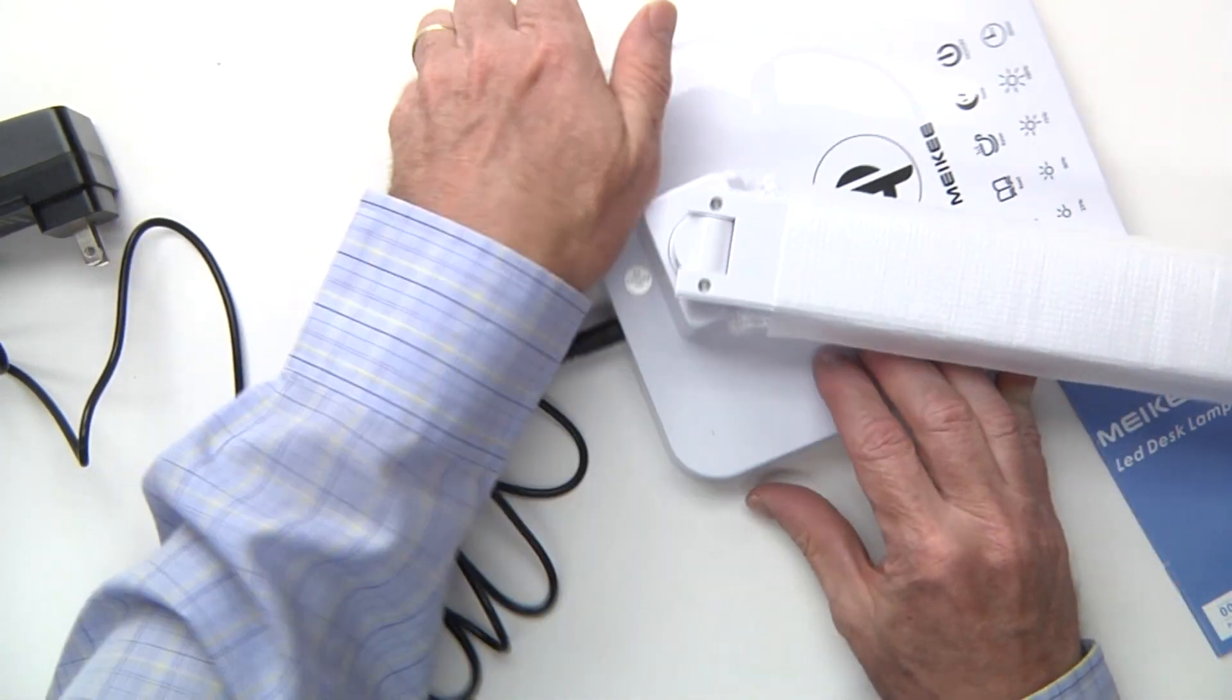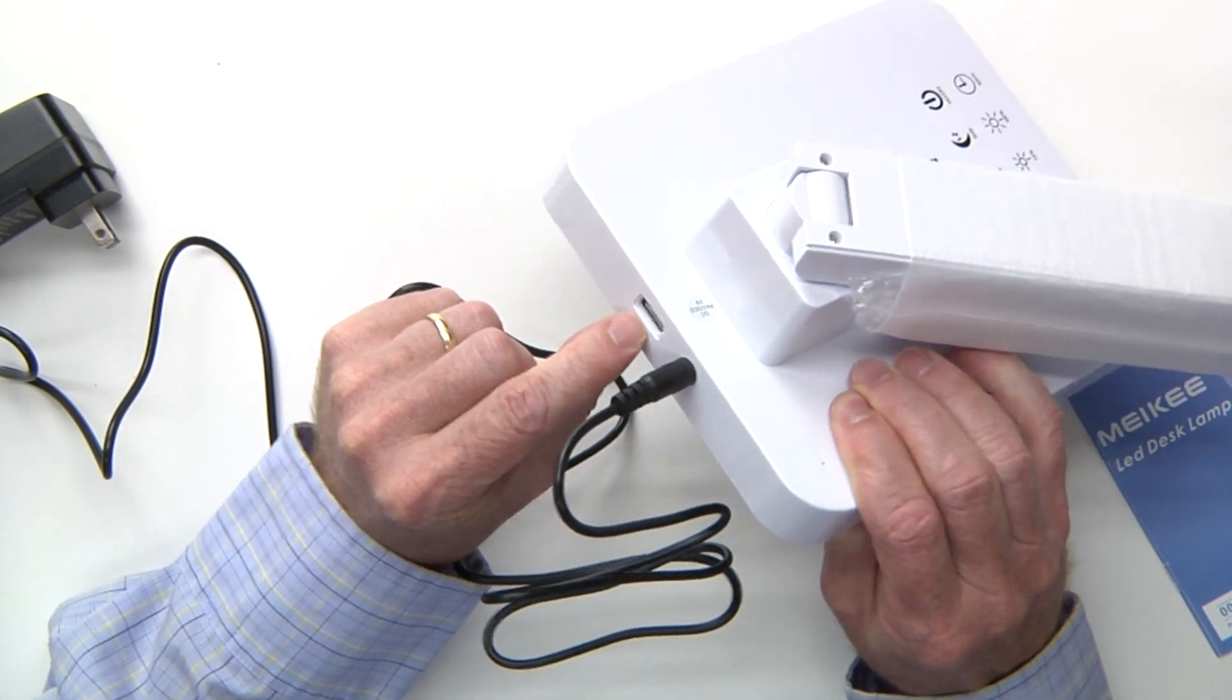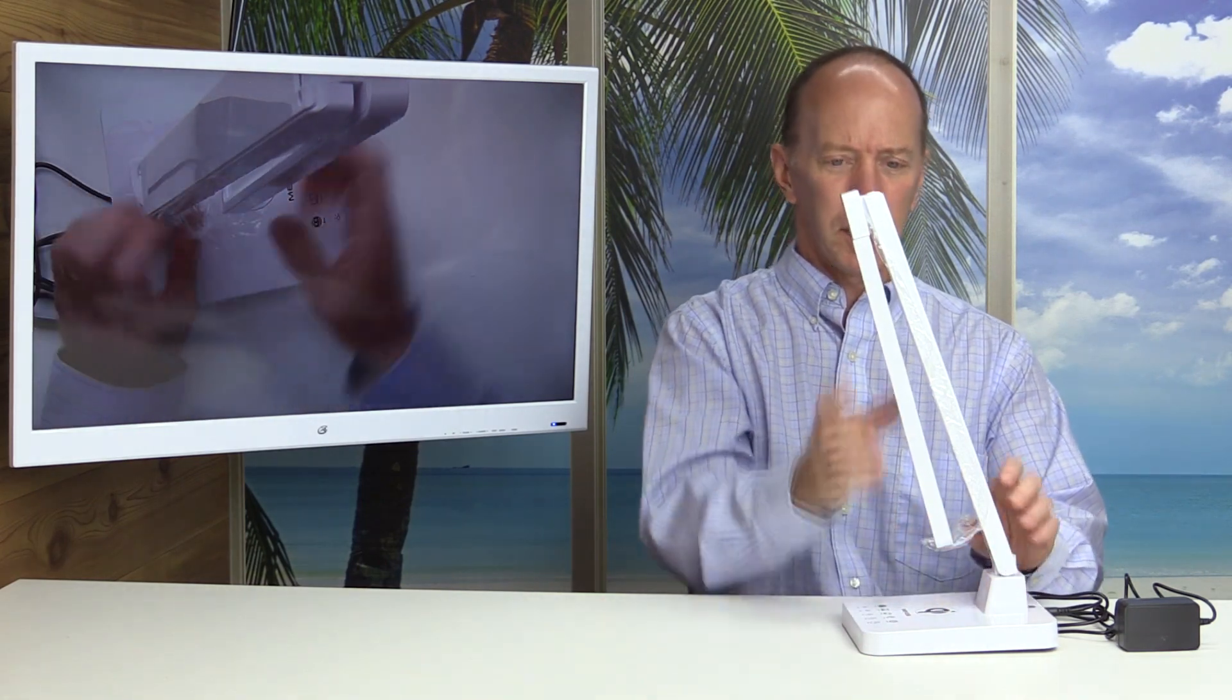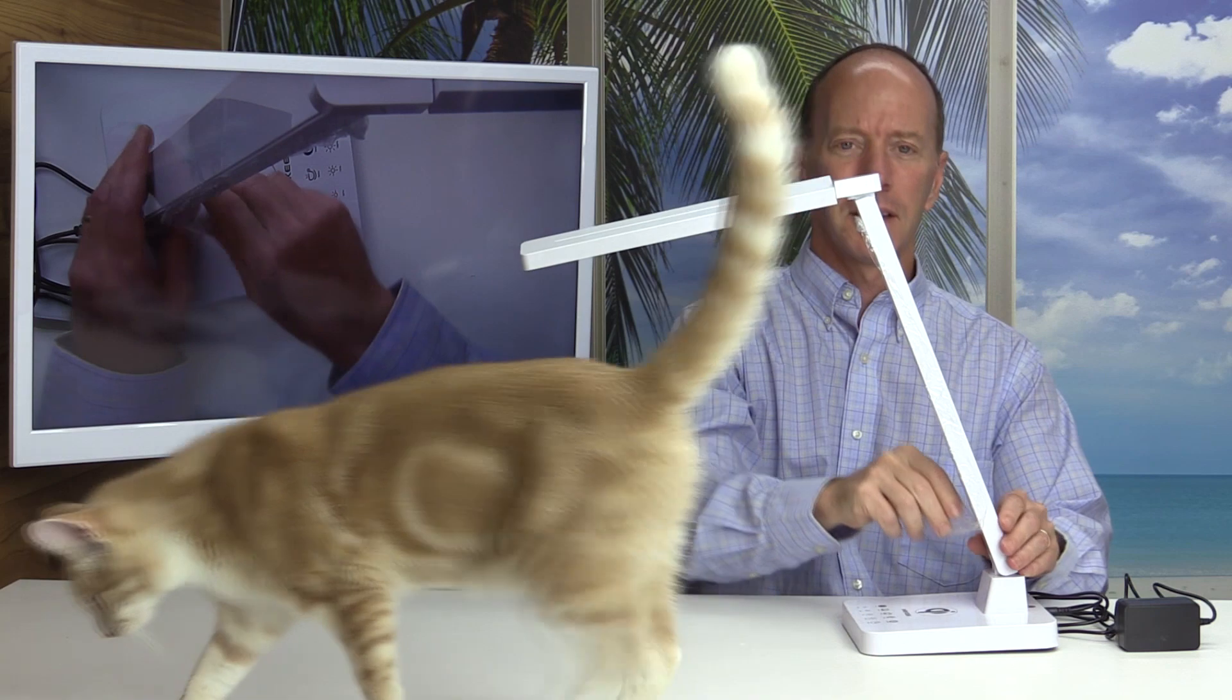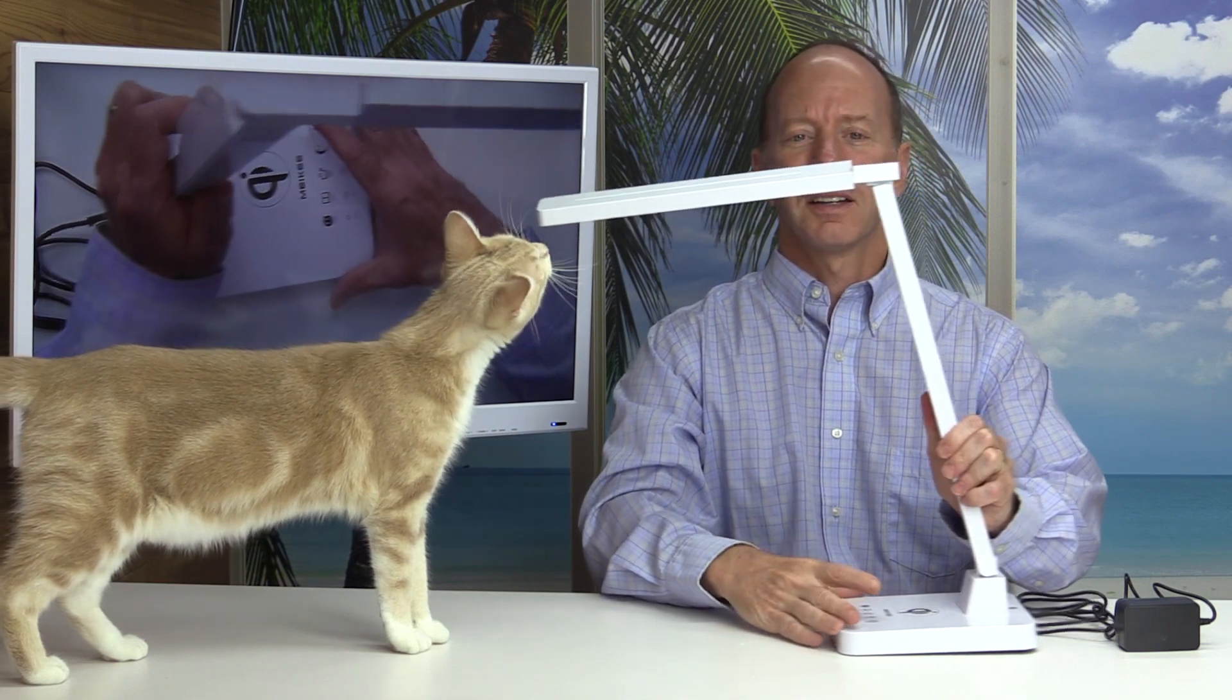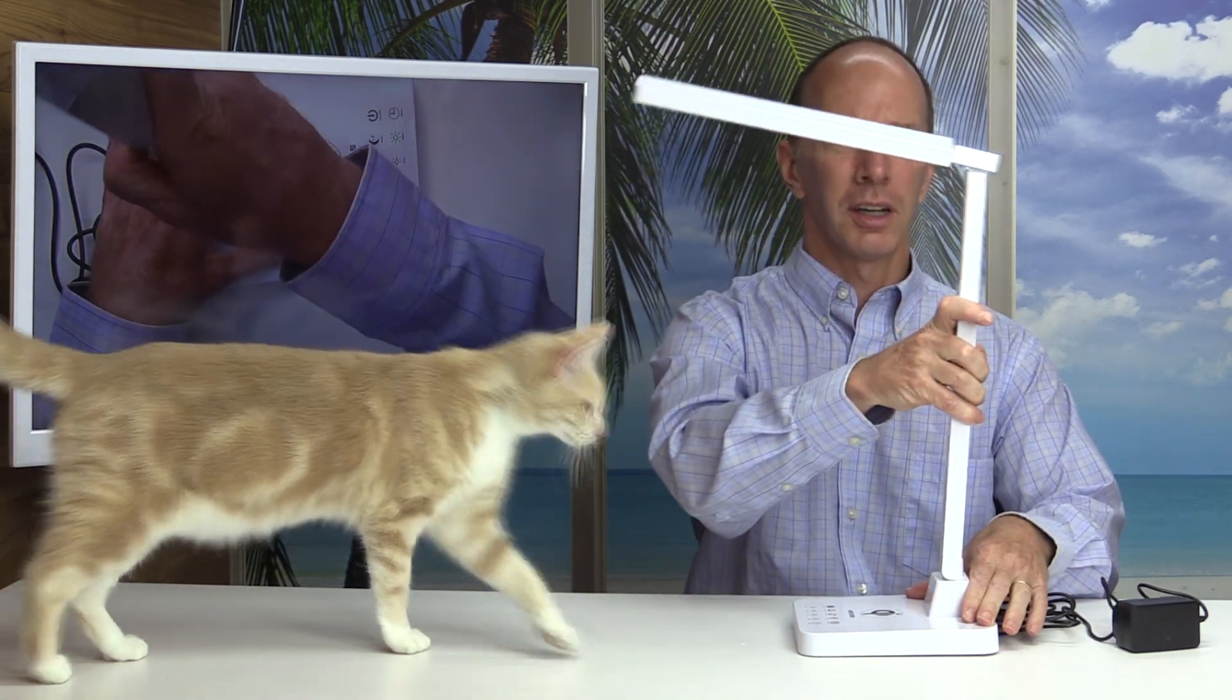And you can see that here is a USB port. I'm going to fold this up. It has some plastic wrap on the arm. You can see my cat is very interested to see this new product here.